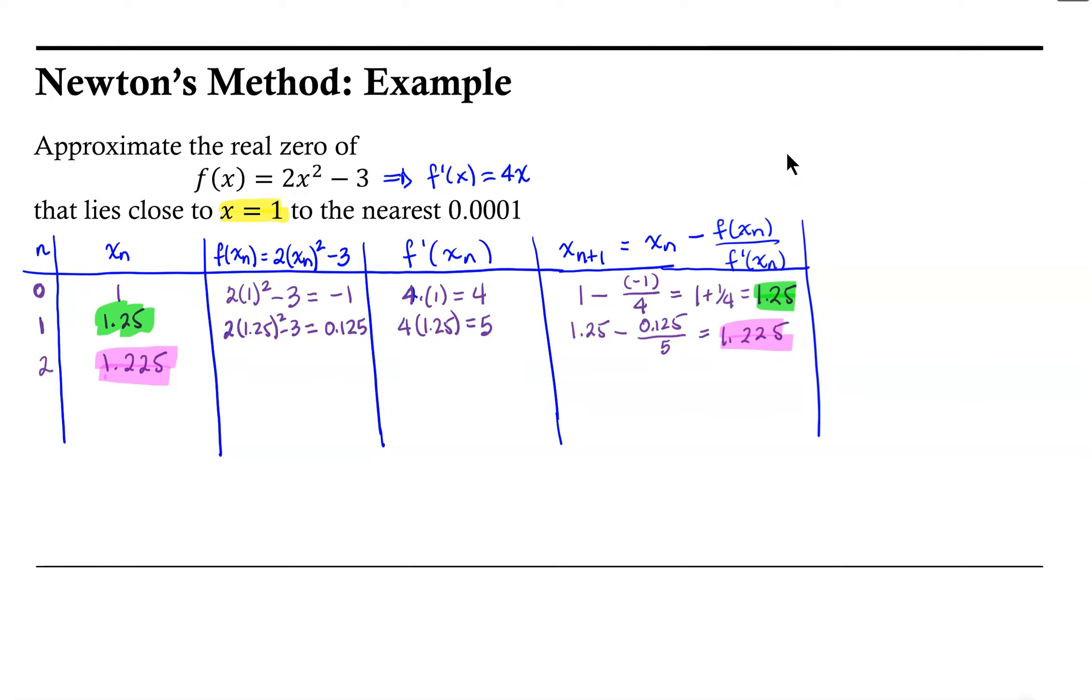It's our x2. So 1.225 becomes the next x value, our next iteration. And so f at xn is 0.00125, f prime at 1.225.